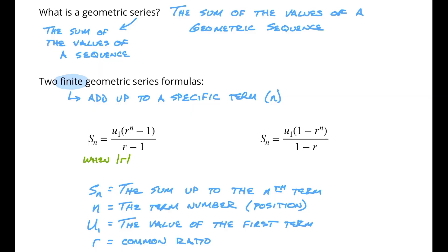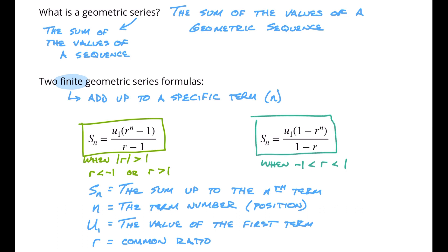It's really a matter of preference, but here's what we suggest to help eliminate extra negative signs floating around in your calculations. When the absolute value of r is greater than 1 — meaning r is less than negative 1 or r is greater than 1 — use the first equation. But when negative 1 is less than r is less than 1 — meaning r is a fraction or decimal value between negative 1 and 1 — use the second equation. If you don't follow those rules, that's totally okay. Really there is no difference between the two formulas.